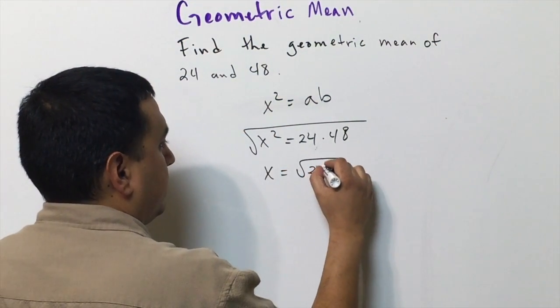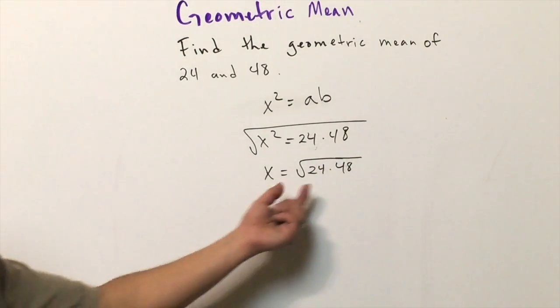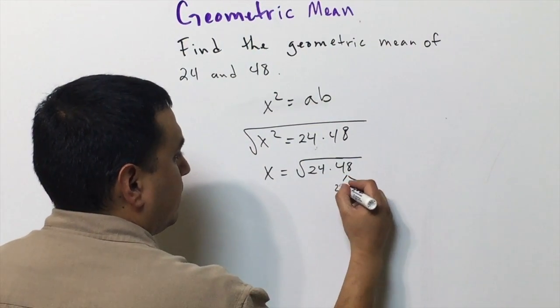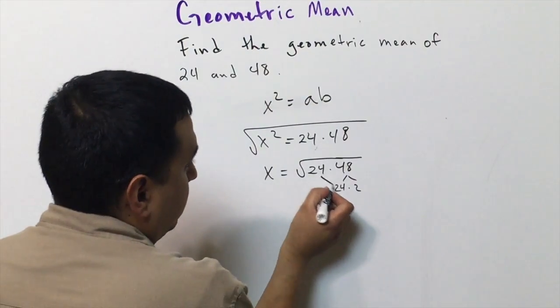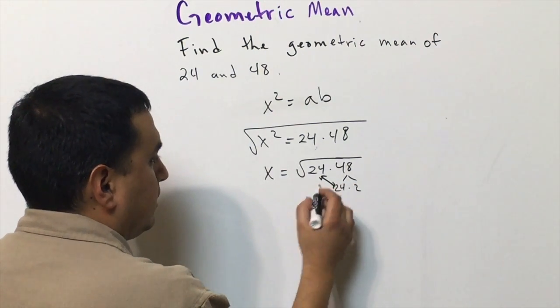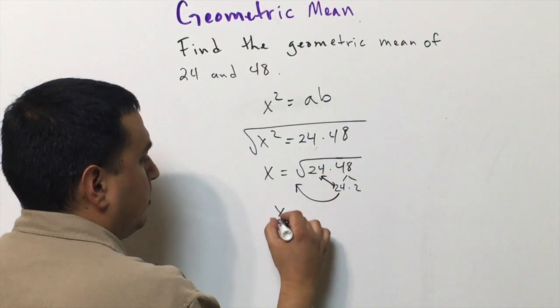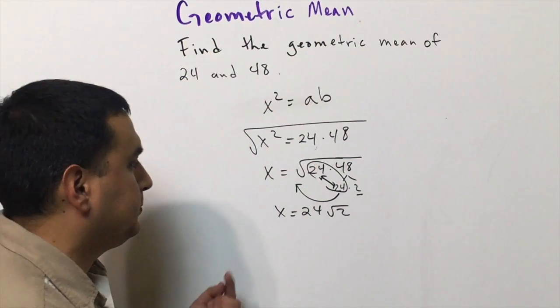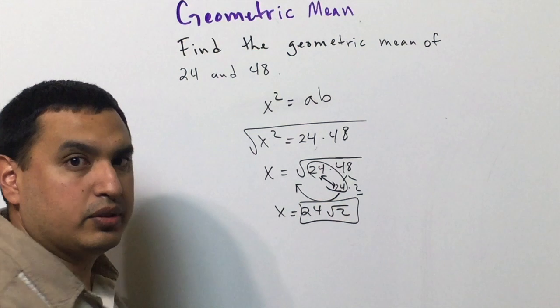That means I take the square root of everything. x equals the square root of 24 times 48. I can factor the 48 into 24 times 2, and since I have 24 times 24, this is going to create a pair. 24 comes out of the square root, so I have 24 square root of 2. The geometric mean of 24 and 48 is 24√2.